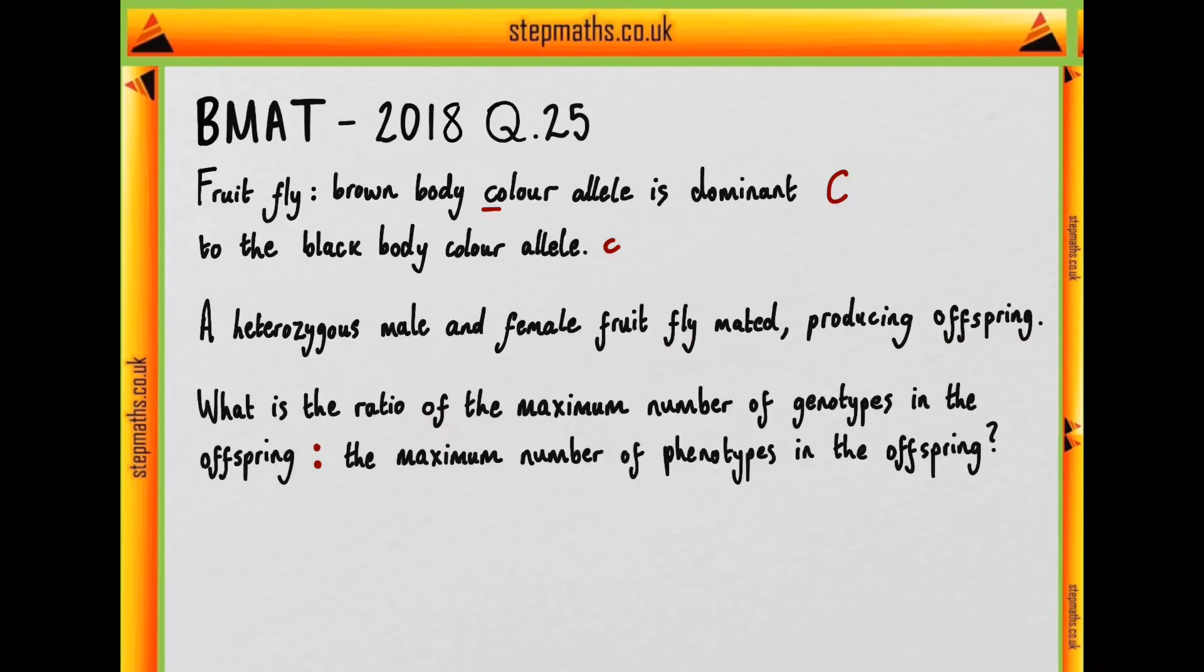And we're asked what the ratio is of the maximum number of genotypes in the offspring and the maximum number of phenotypes in the offspring. So what are the potential genotypes and what are the potential phenotypes, and we can work that out as a ratio.